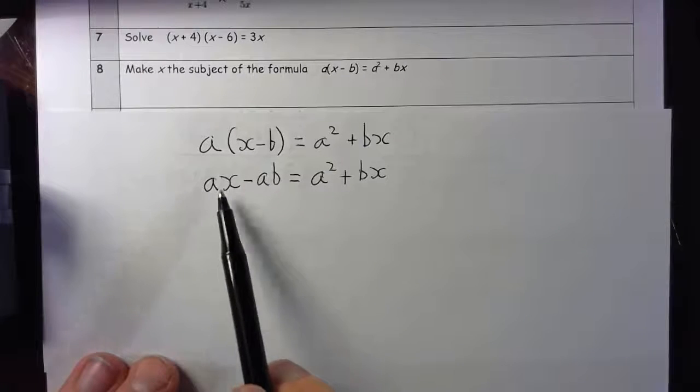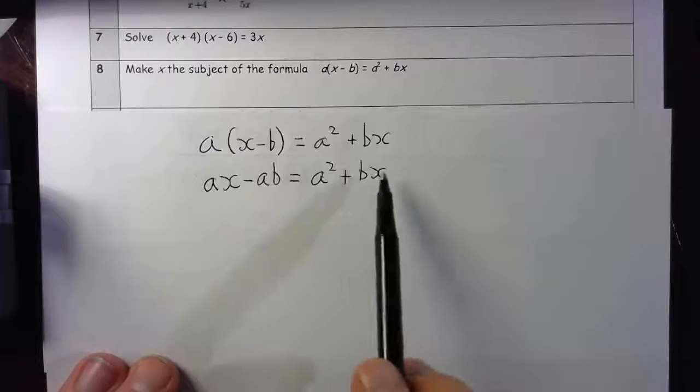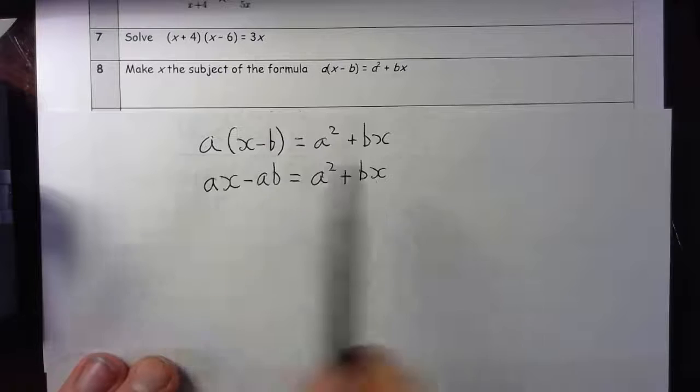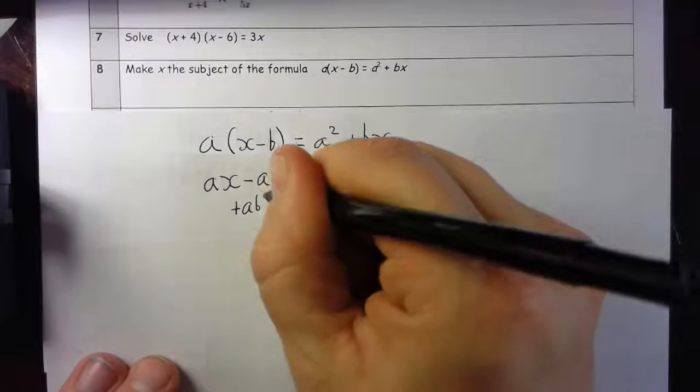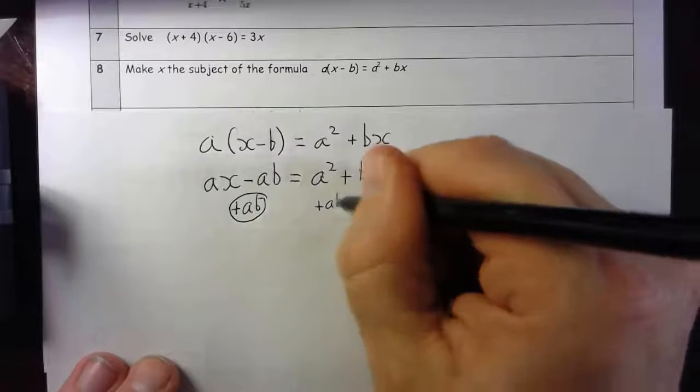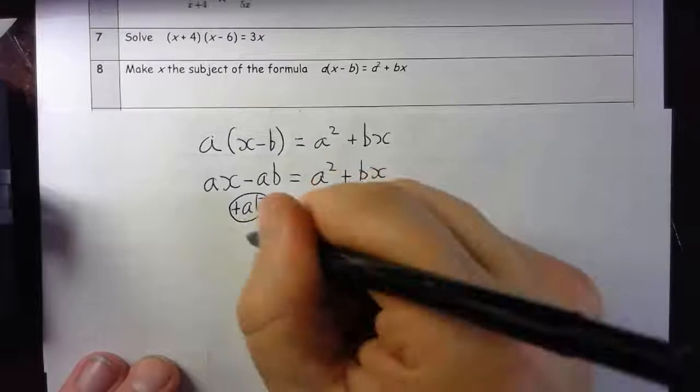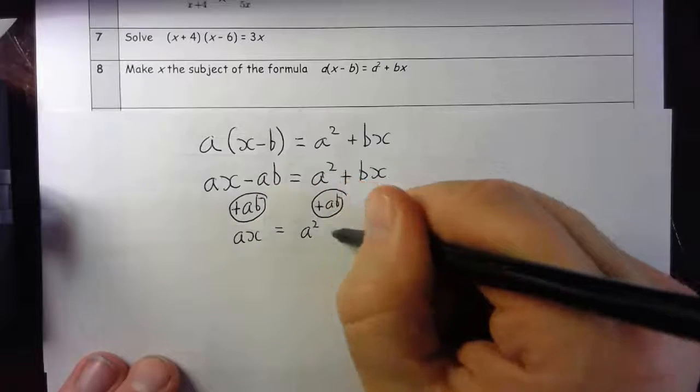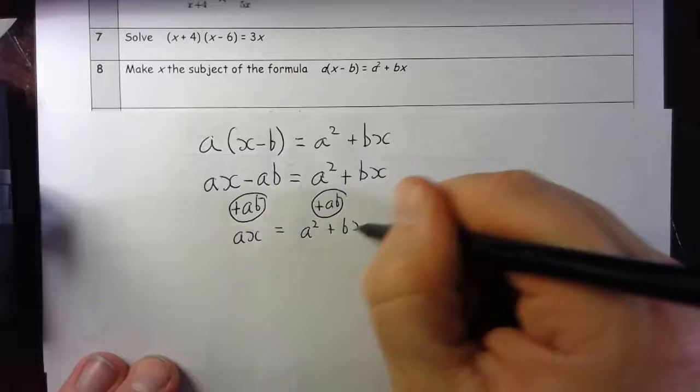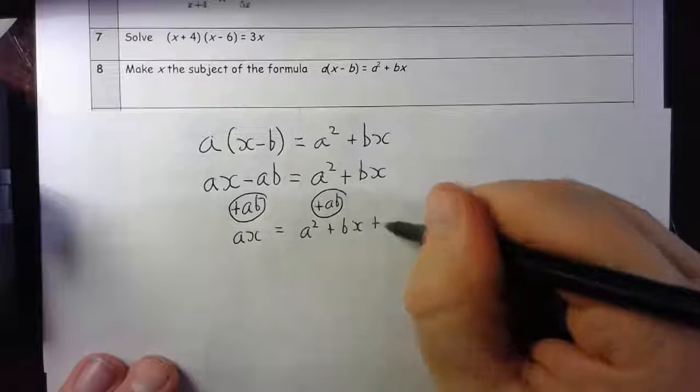Now I've still got my terms with x in them on both sides which I don't want. So I'm going to add ab to both sides. Add ab. That gives me ax equals a² + bx + ab.